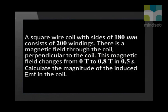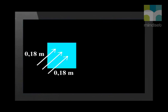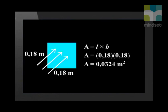We have to calculate the magnitude of the induced EMF in the coil. First, we draw a picture of the situation, then we calculate the change in the magnetic flux, and then we can answer the question. The square with size of 180 millimeters must be converted to 0.18 meters. The magnetic field is perpendicular to this area. The formula for the area of a square is length times breadth, so 0.18 meters multiplied by 0.18 meters is equal to an area of 0.0324 square meters. Do not round this value off because it is not the final answer.